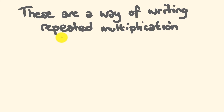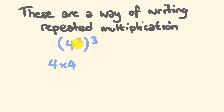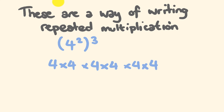What about in brackets: 4 squared, to the power of 3? What is this equal to? Well, 4 squared is 4 times 4, and we're doing this three times — so we have 4 times 4, times 4 times 4, times 4 times 4. This whole part has been raised to this power and we're multiplying them together. So our base is 4 and we're multiplying it by itself 1, 2, 3, 4, 5, 6 times — so the answer is 4 to the power of 6.